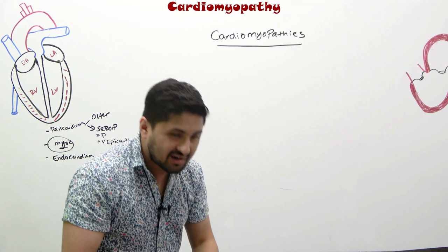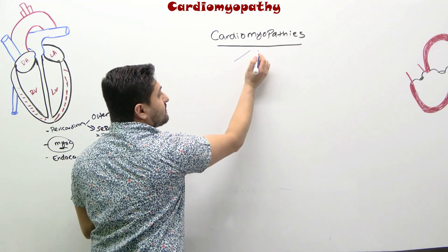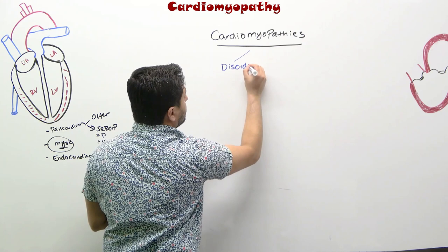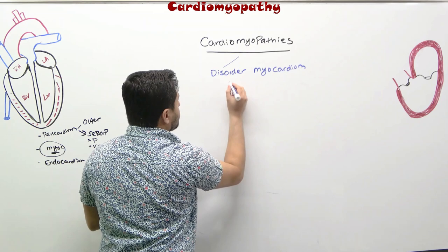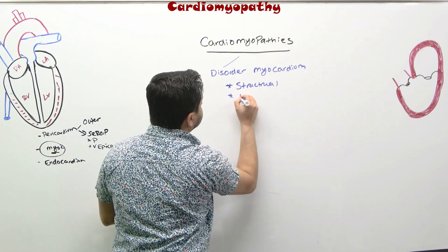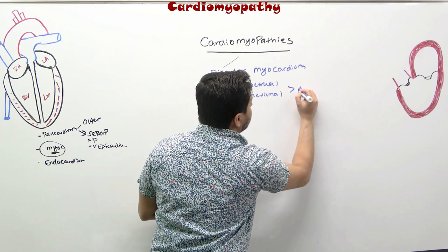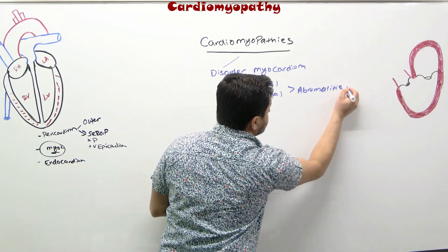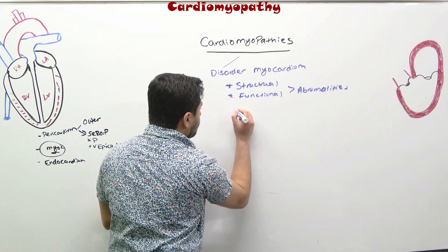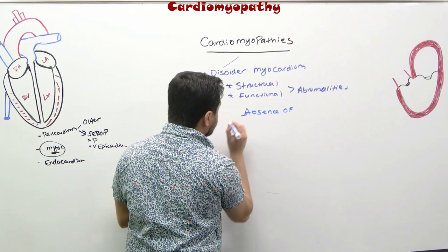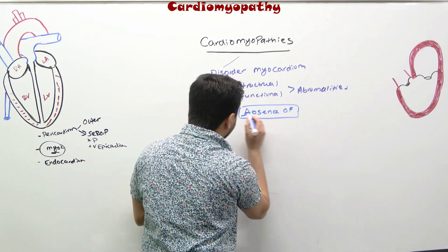Coming back to the definition: cardiomyopathy refers to disorders of the myocardium — myocardial disorders — that result in structural and functional abnormalities. This is a key phrase. In the absence of — and this part is very important for your definition —